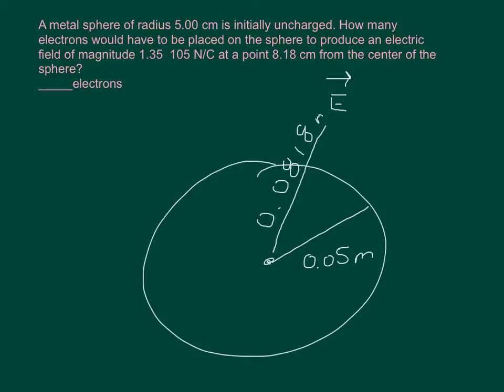The question says, a metal sphere of radius 5 cm is initially uncharged. How many electrons would have to be placed on the sphere to produce an electric field of magnitude 1.35 times 10 to the 5th newtons per coulomb at 8.18 cm from the center of the sphere?